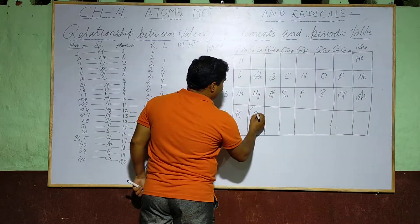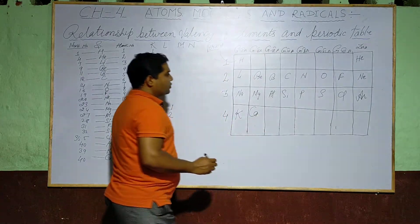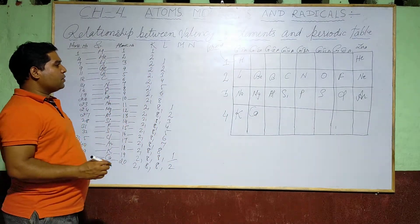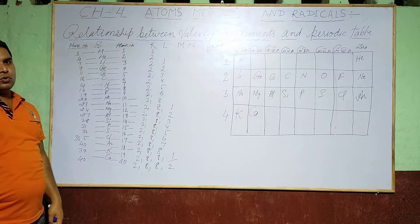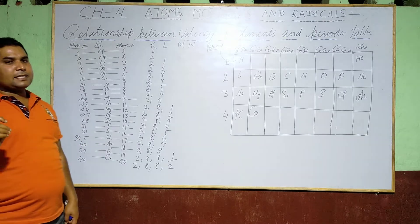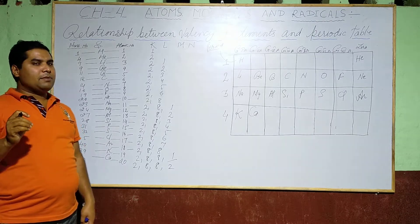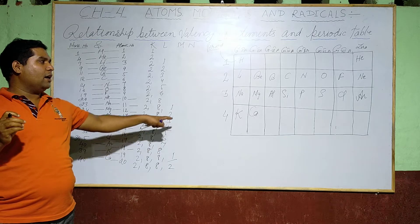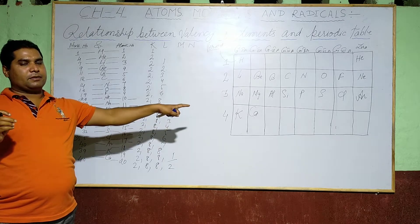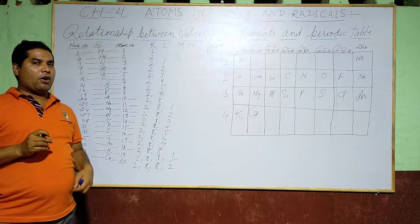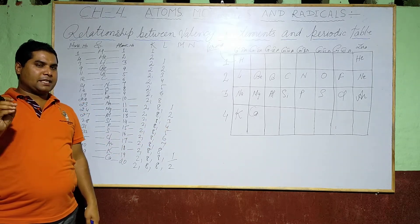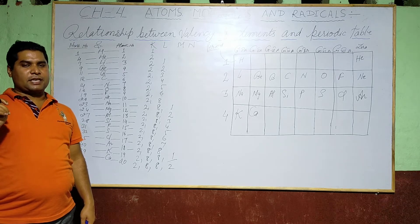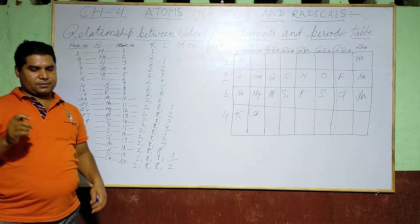So dear student, I hope you understood how to place elements with atomic numbers 1 to 20 in the periodic table. No doubt — just practice it and try to understand it. Thank you, dear students.